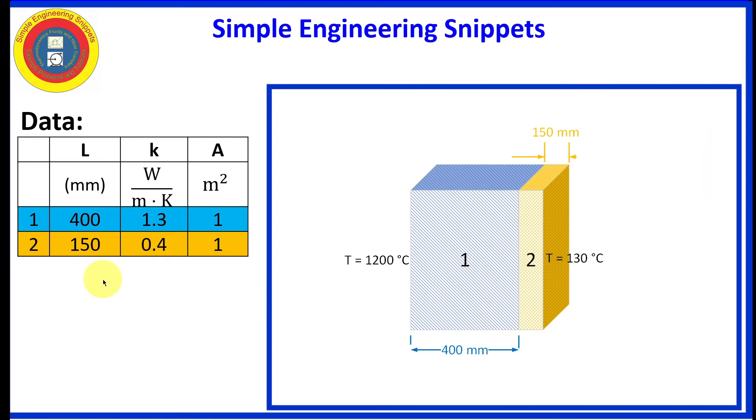And we are supplied with some additional data, including the length of each and the conductivities of slab one and slab two. And to keep it simple, we're going to say that the cross-sectional area is just one meter squared. I should also note that we are assuming perfect thermal contact between slab one and slab two, and that way, we don't have to worry about a gap conductance or a resistance due to the gap.